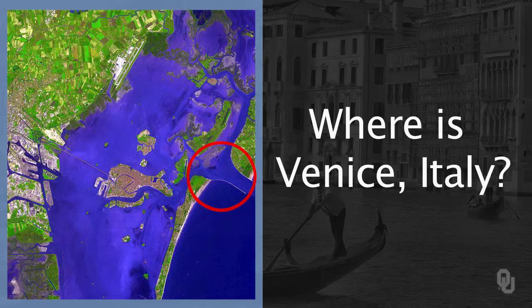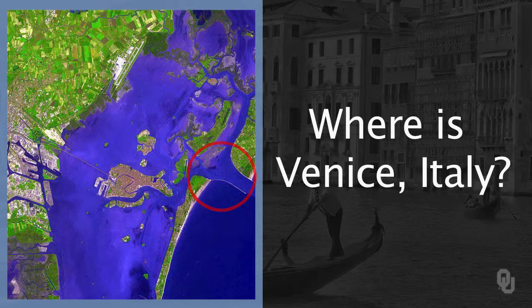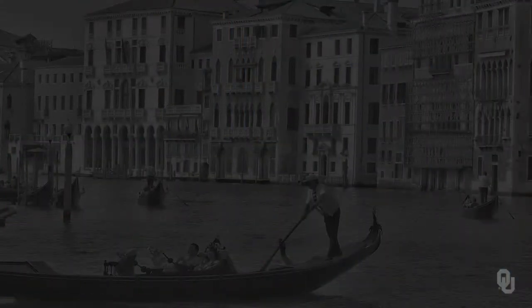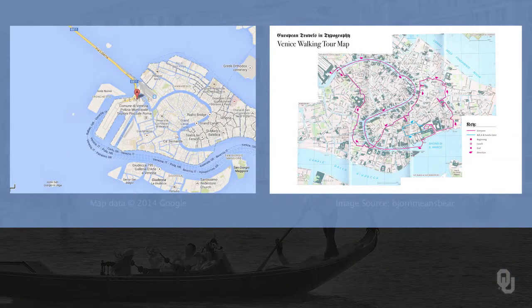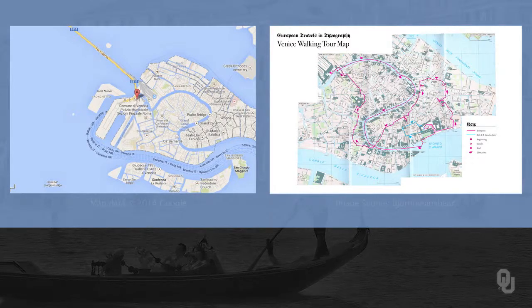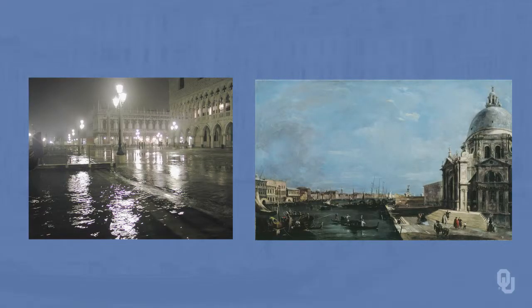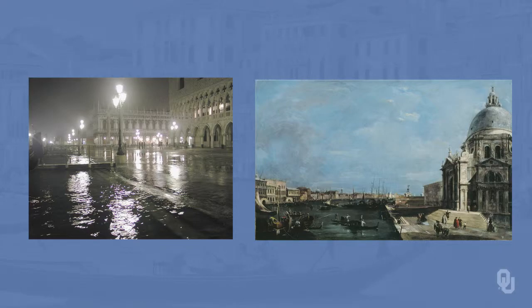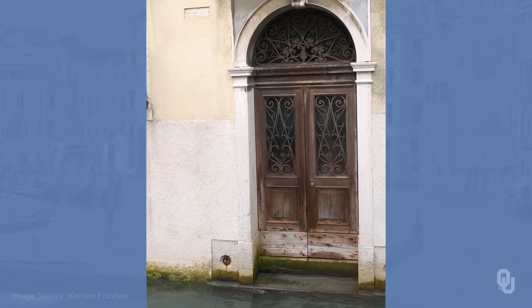High tides come in and cause parts of the city to be flooded. Here are several close-up maps of Venice showing that Venice is actually made up of a number of islands and lots of canals. One of the pictures has very high water. The picture on the right is of Venice and the canals without high water. And the lower picture is of a door within Venice — notice the water damage along the bottom of the door.